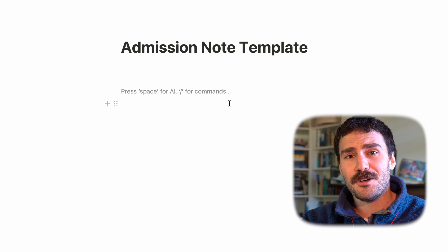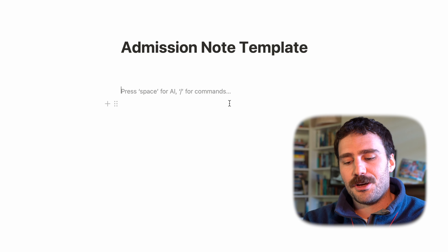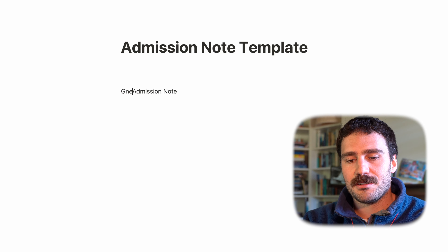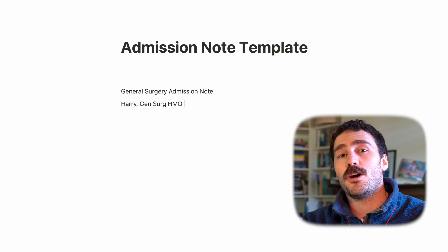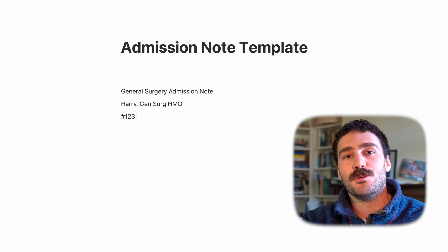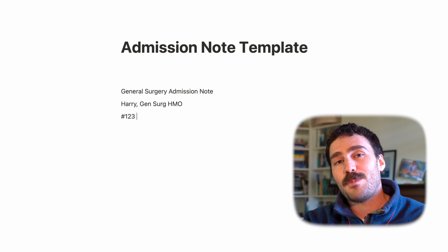It can be quite overwhelming, but this is just my particular structure — everyone has their own way. The first thing you do is title the admission note for whatever unit it is. If you're working in the surgical department, you might type it as 'General Surgery Admission Note.' You put in your name, your title — for example, 'Gen Surge HMO' (HMO stands for Hospital Medical Officer) — and your pager number, so that nursing staff or anyone who sees the note can contact you directly.